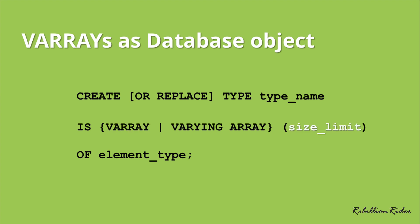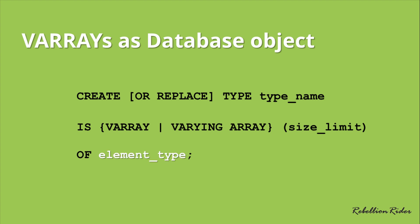Then we have the size limit. Unlike nested tables, VARRAY is a bounded form of collection, which is why we have a size limit here — something you will not find in nested tables. By bounded I mean you have to decide how many elements you want to store in your collection while declaring it. Whereas in nested tables, which are unbounded, there is no upper cap on the number of elements. Then we have the keyword OF, followed by the type of elements you want your collection to hold — this could be a primitive data type or a user-defined data type.